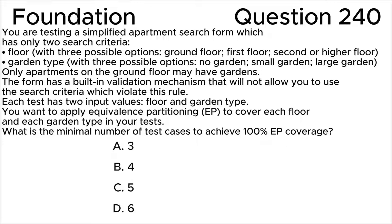ISTQB foundation level question 240. You are testing a simplified apartment search form which has only two search criteria: floor, with three possible options — ground floor, first floor, or second or higher floor — and garden type, with three possible options — no garden, small garden, or large garden. Only apartments on the ground floor may have gardens. The form has a built-in validation mechanism that will not allow you to use search criteria which violate this rule.